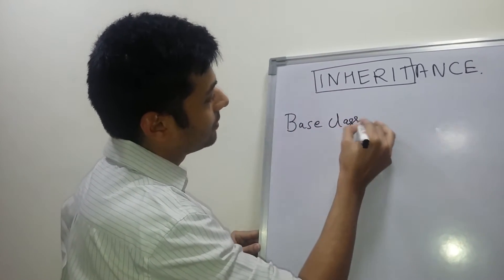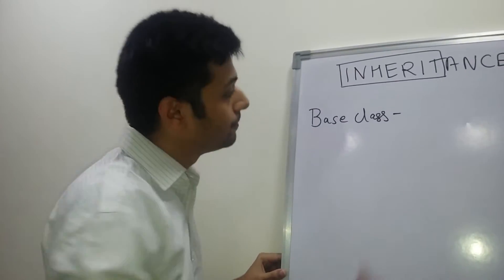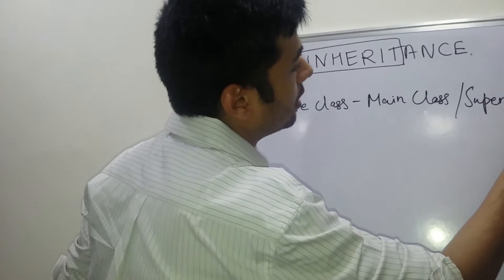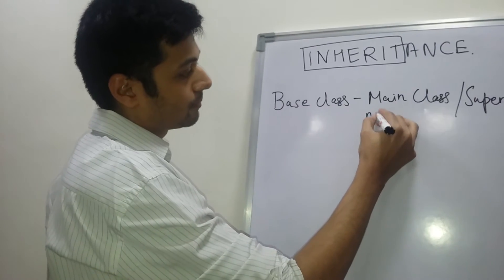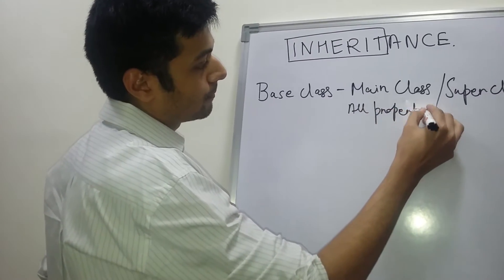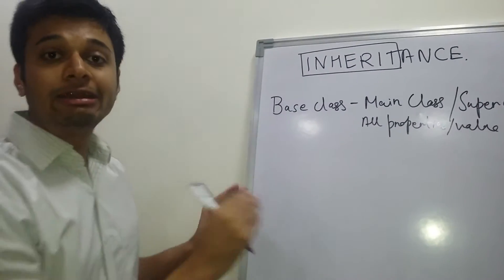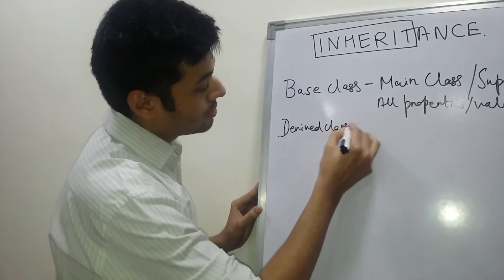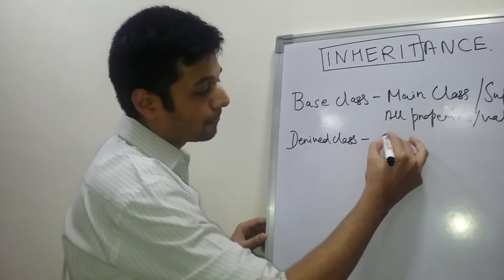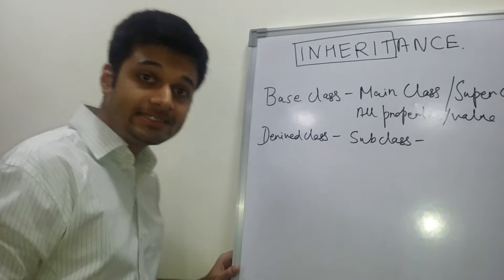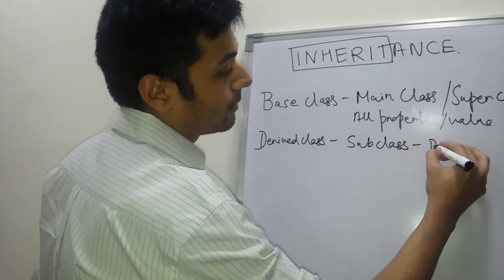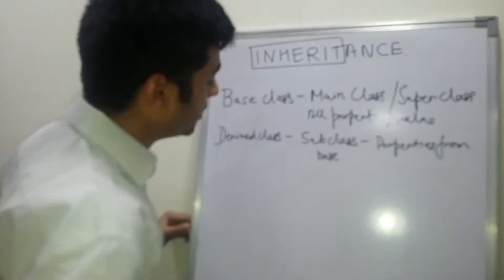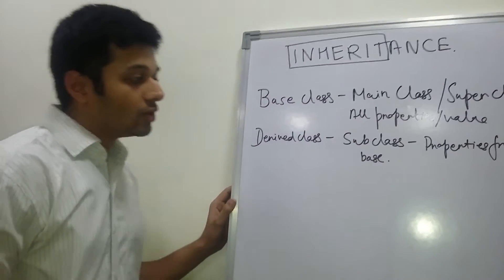Base class can also be called as the main class or the super class. Base class contains all the properties and values. The class which has been inherited from the base class is called the derived class. Derived class can also be called as a subclass, which contains properties from the base class. The properties which the derived class has have been taken from the base class.